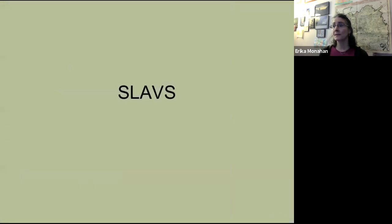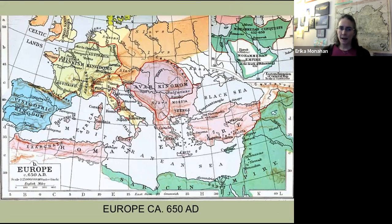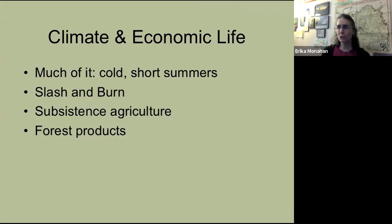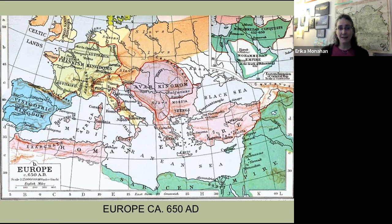Now, a few words about Slavs. Slavs are identified in history as a people of the forest who lived largely by hunting and gathering and a little bit of slash-and-burn agriculture. From the 5th century, ancient historians tell us we start to see migrations westward, perhaps occurring as a result of major movements of Huns and similar peoples farther to their east.